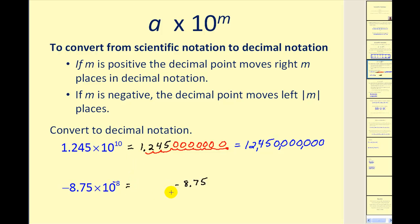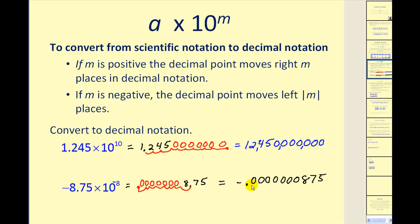The negative sign is temporarily set aside. Moving left eight places: as soon as we move it once there are no more digits, so we need to add another seven zeros — one through eight places to the left. So our number in decimal notation, remembering it is a negative value, is negative 875 ten-billionths.